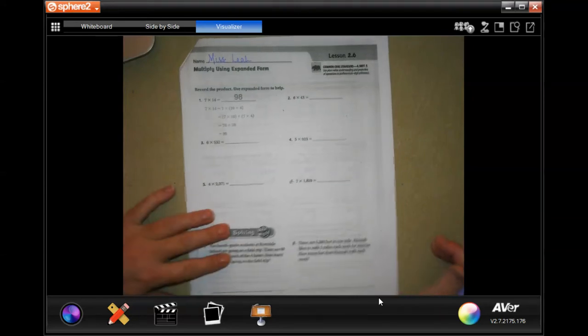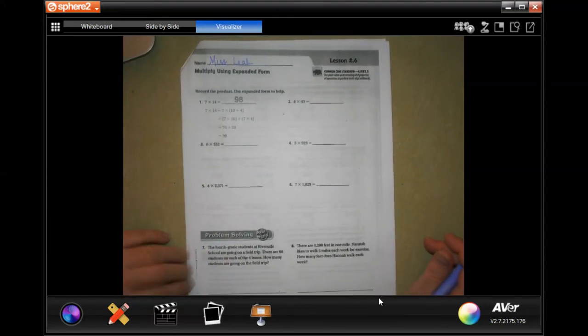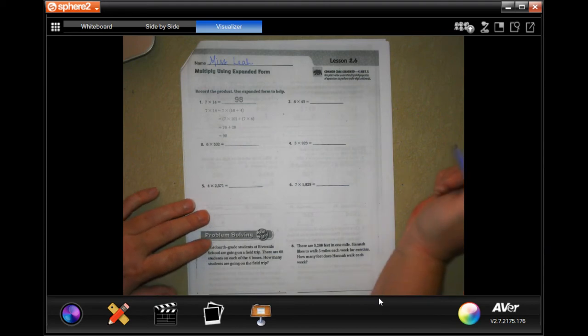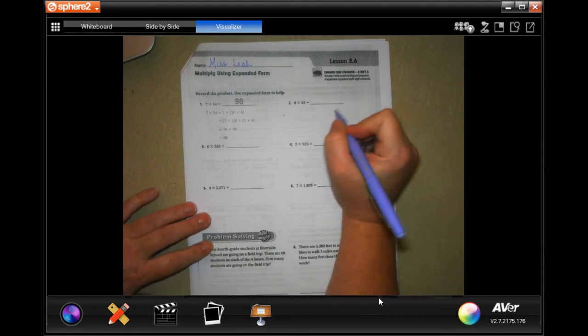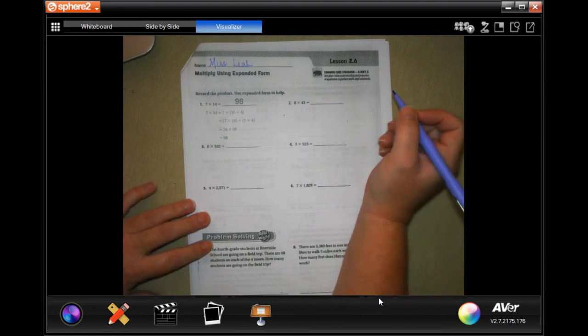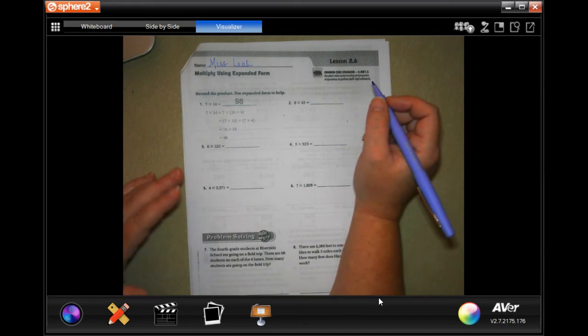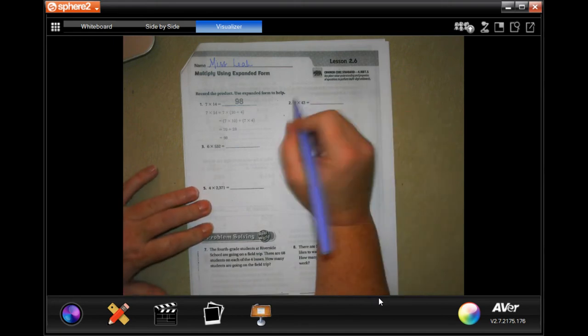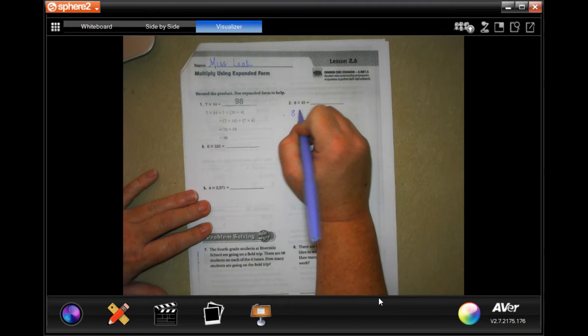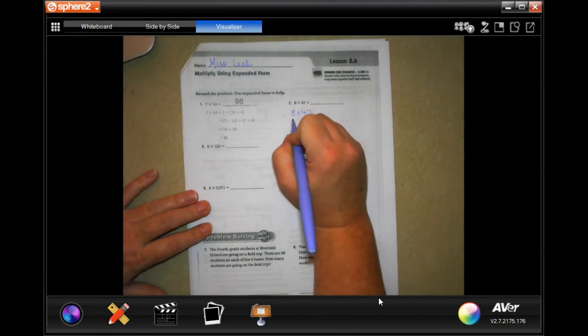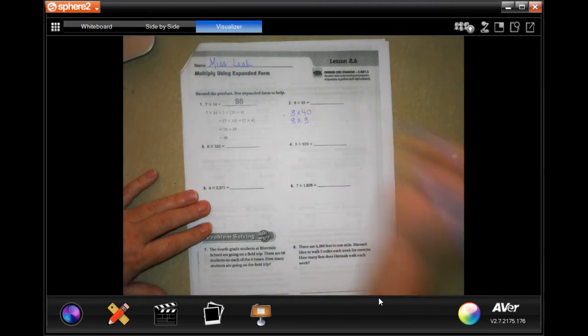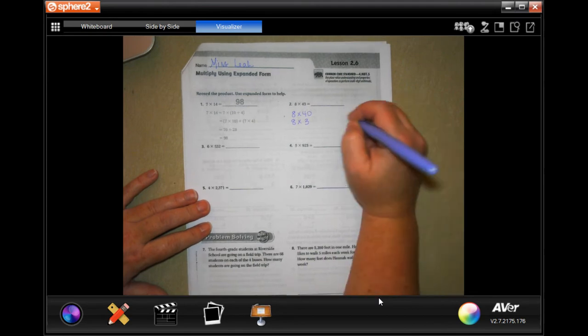Okay, so welcome to fourth grade chapter two lesson six. Alright, go ahead and get started. On these, it wants you to multiply using expanded forms like we were doing before with the boxes, but this one it wants you to try to do it without the boxes. Now you can, or if you absolutely need the boxes, you make them.